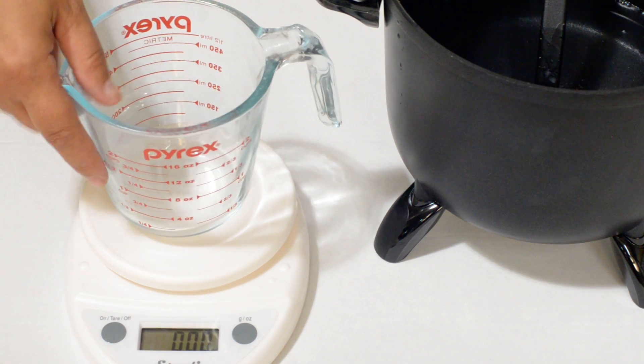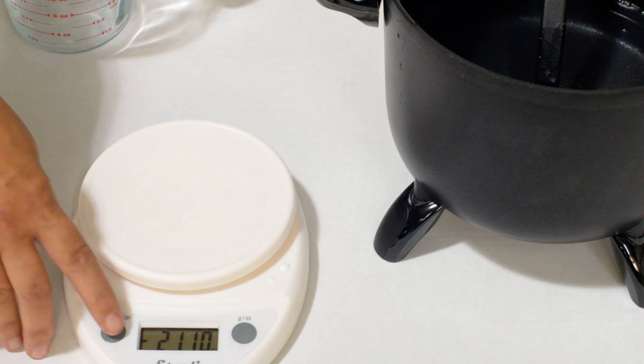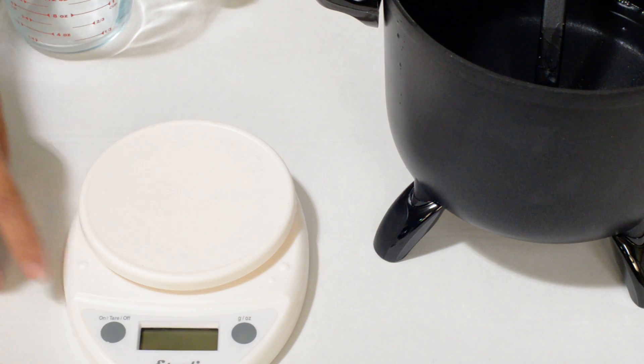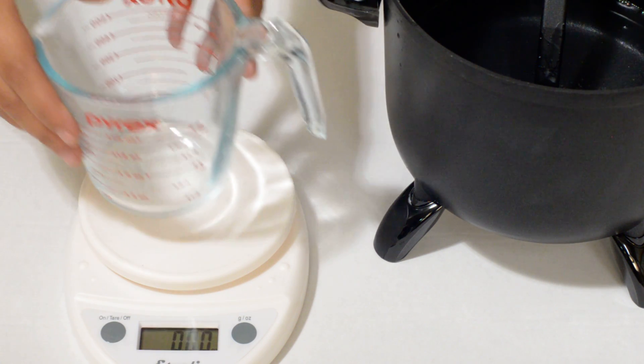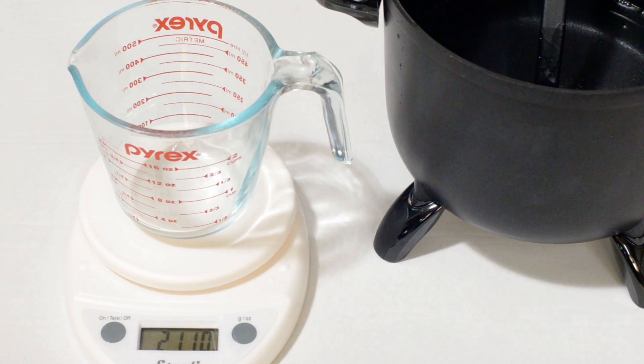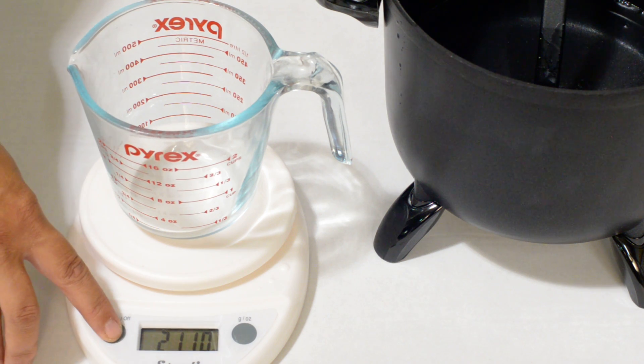The second way is to use the tare feature on the scale. We're going to turn on the scale, place our container on the scale, and hit the tare button.